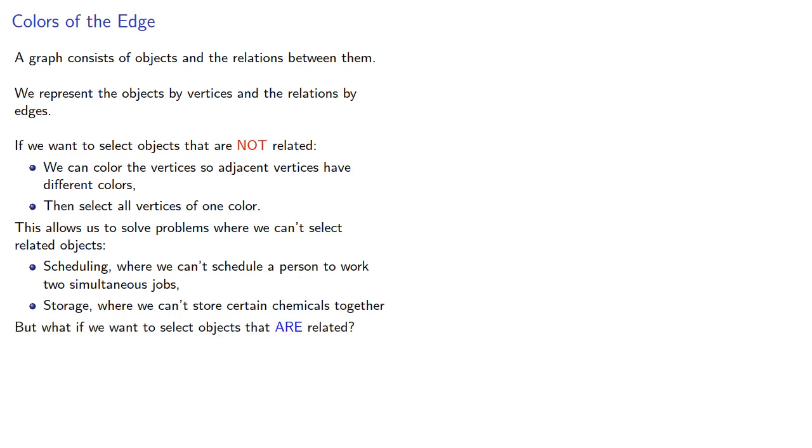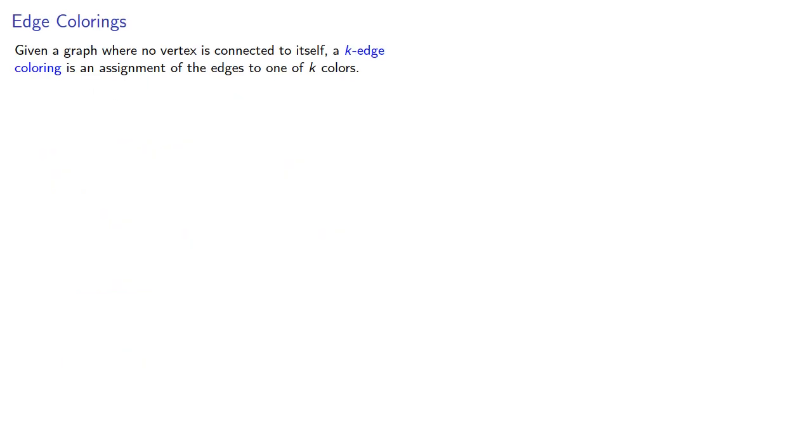But what if we want to select objects that are related? For that, we'll need an edge coloring. Given a graph where no vertex is connected to itself, a k-edge coloring is an assignment of the edges to one of k colors. The coloring is proper if adjacent edges have different colors. A graph is k-edge colorable if a proper k-edge coloring exists.